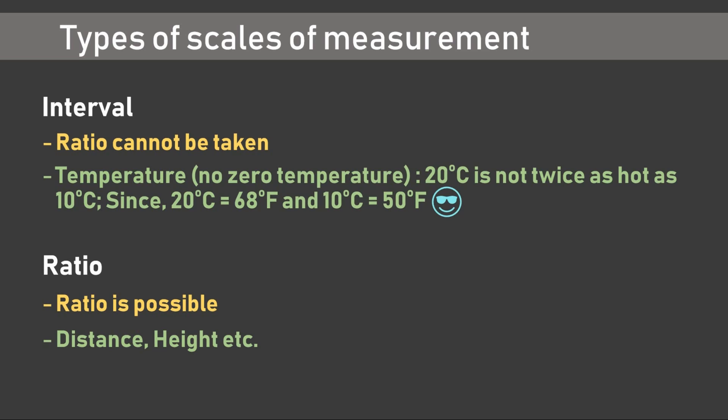For a ratio scale, all the shortcomings seen so far do not hold. Here we can measure, compare, and carry out arithmetic operations on the responses. A ratio scale has a true zero. Some examples would be distance, height, or measurement of a liquid quantity — we can have zero distance, zero height, or zero liquid quantity. We can also add distances, heights, or liquid quantities. Nominal and ordinal scales often relate to qualitative data, while interval and ratio scales relate to quantitative data.